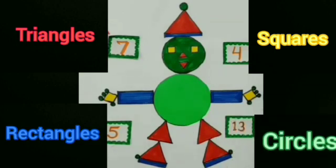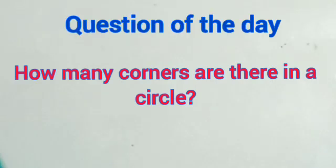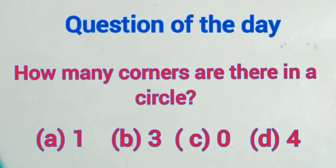We have learned to make a joker with these different figures. Now, it's time for the question of the day. Question is, how many corners are there in a circle? We have learned that circle has no corners. It means circle has zero corners. This answer is correct on option C. We will put a tick on option C.